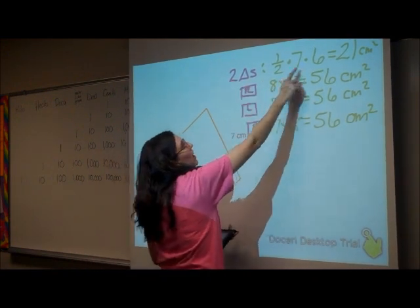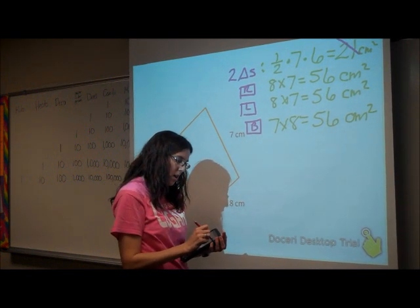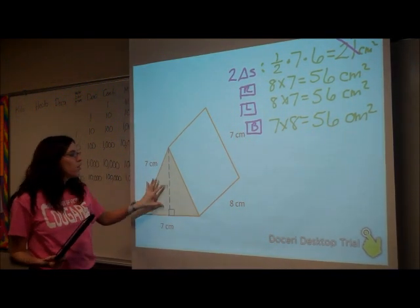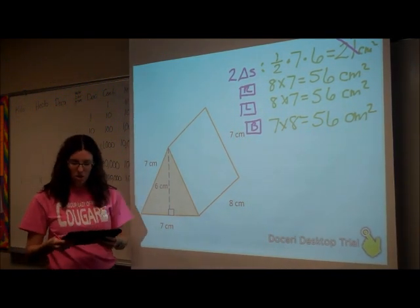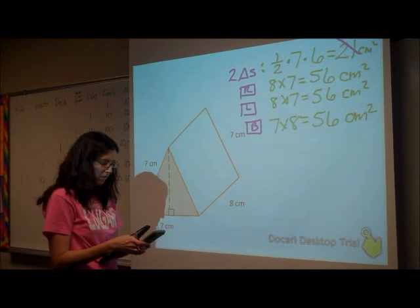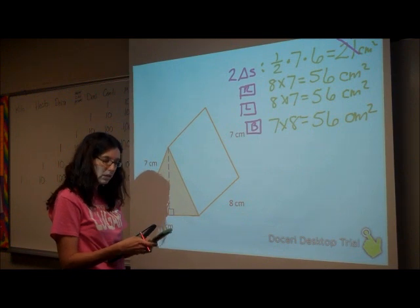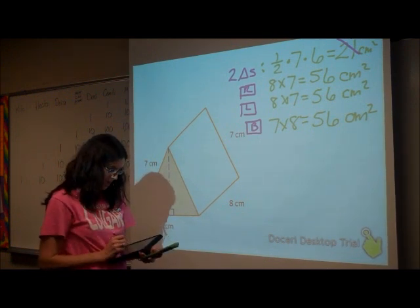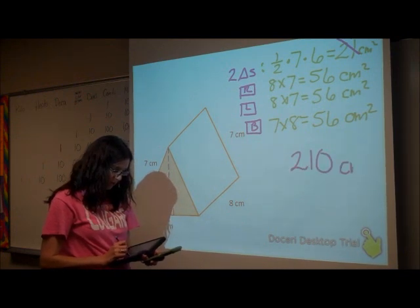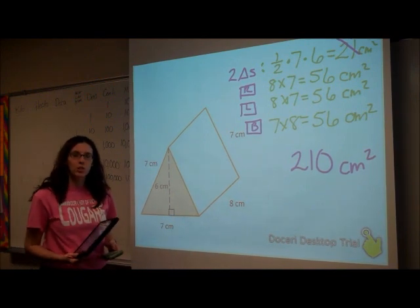But remember, with my triangles, I have two of these. So instead of using 21, I've got to use 42, because that 21 was just the area of one of these triangles. So I want to take my 42 plus 56 plus 56 plus 56, and I get that my area is 210 square centimeters for this triangular prism.